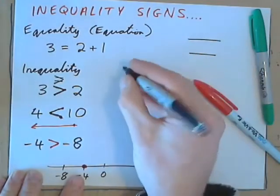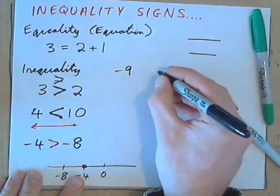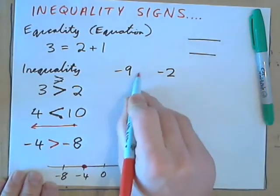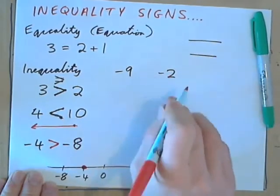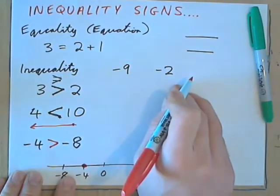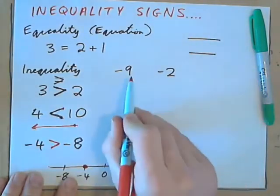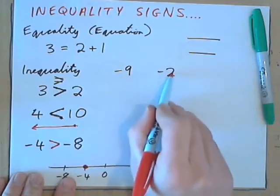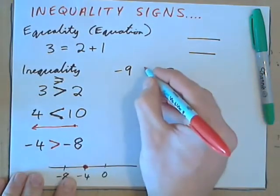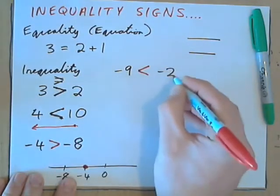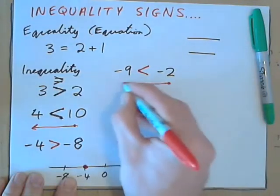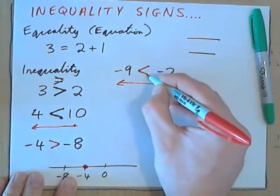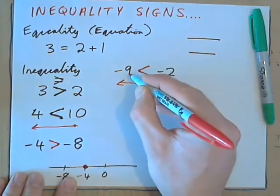So you do one now. If you had negative 9 and negative 2, how would the inequality sign go? So put an inequality sign here. Which is lesser? Negative 9 is lesser, isn't it? You'd rather be in debt by 2 dollars than be in debt by 9. So negative 9 is less than negative 2. And read in this direction, for fun. Negative 2 is greater than negative 9.